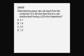What standing wave ratio will result from the connection of a 50-ohm feed line to a non-reactive load having a 200-ohm impedance? We saw that already. We saw that with the animation. We had a 50-ohm feed line, a 200-ohm antenna impedance. That gave us a 4 to 1 standing wave ratio. Now, why isn't it 1 to 4? The reason is that we always state the standing wave ratio with the larger number first. Always state it with the larger number first.